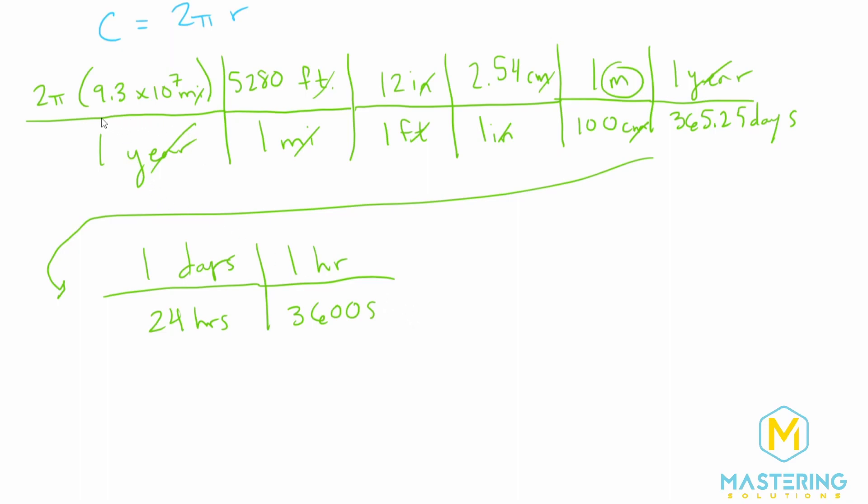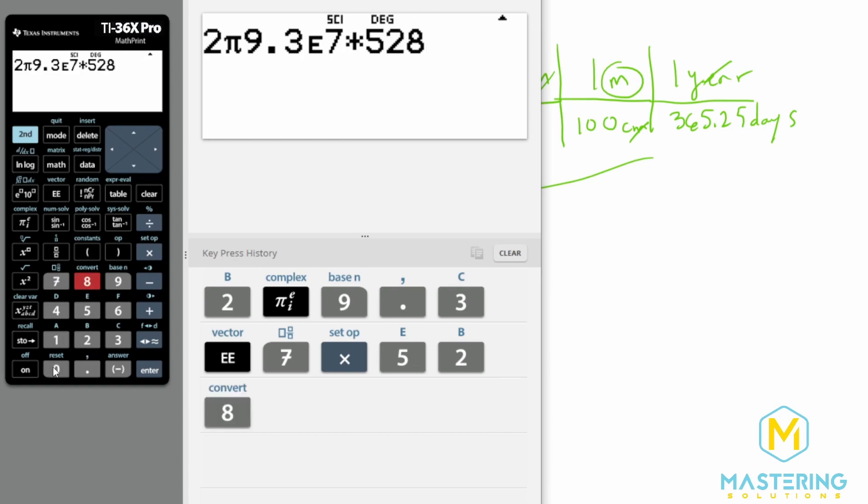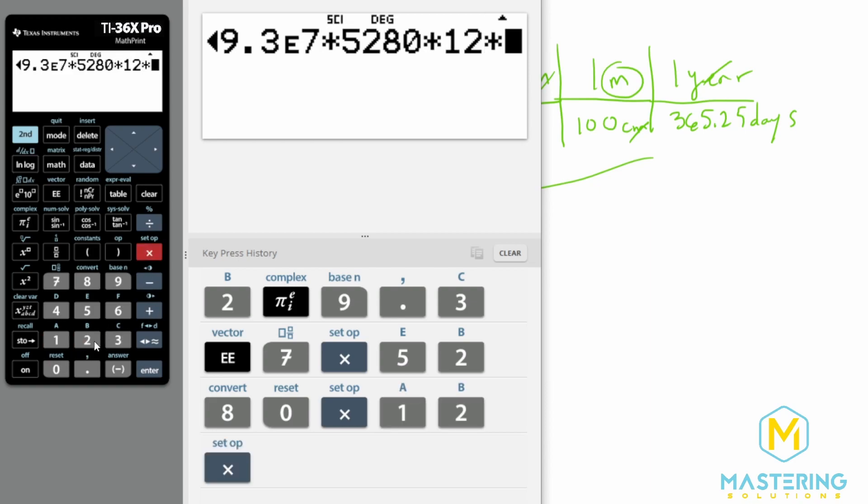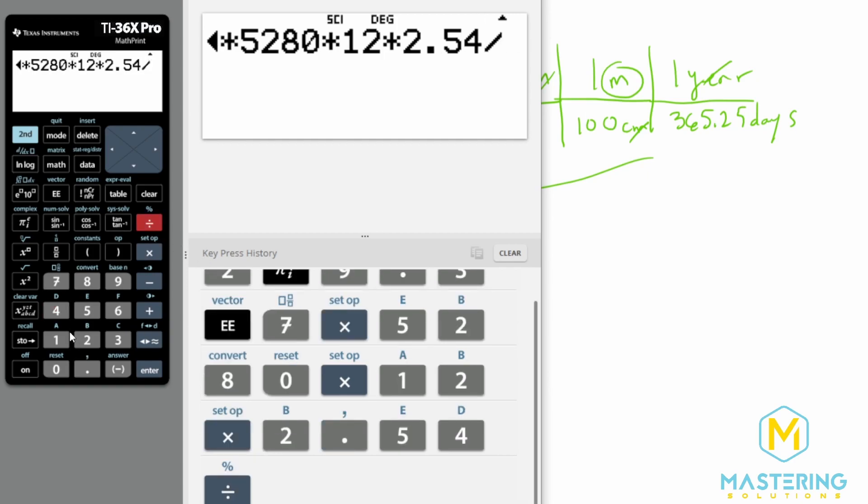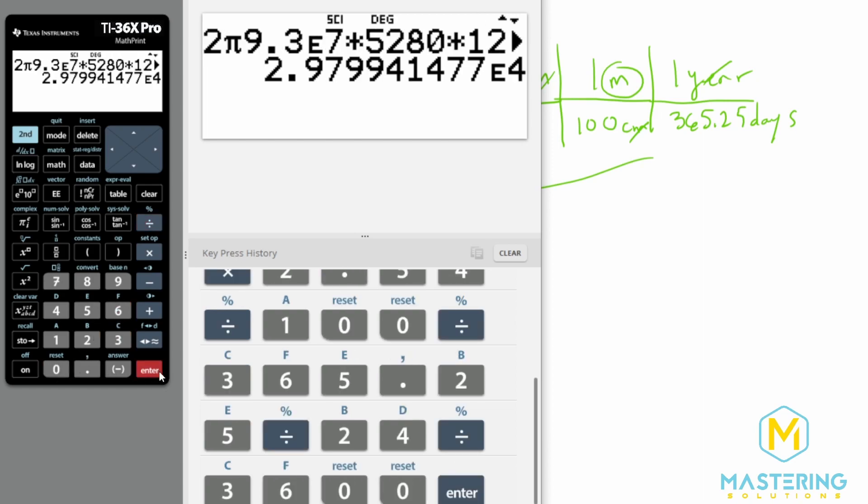Now as we've done on many other problems, all we have to do is multiply and divide straight across. If it's on the top, we multiply. If it's on the bottom, we divide. So we have 2 pi times 9.3 times 10 to the 7, then multiply by 5280 for feet, then by 12 for inches, then 2.54 for centimeters. Now divide by 100 to put us into meters. Now we do the time, dividing by 365.25 days, divided by 24, and finally divided by 3600, which gives us 2.98 times 10 to the 4.